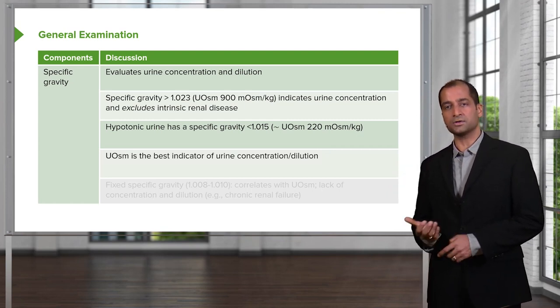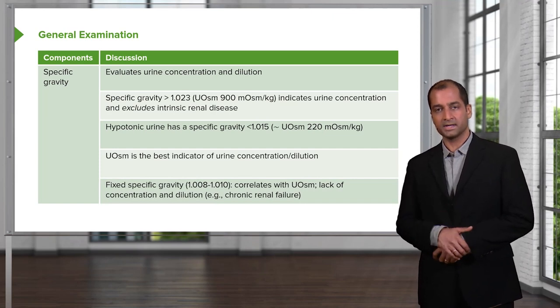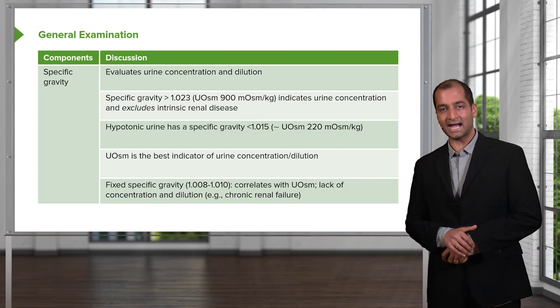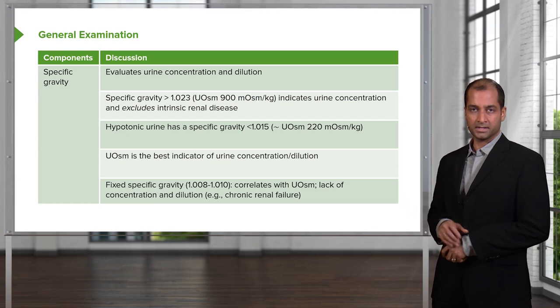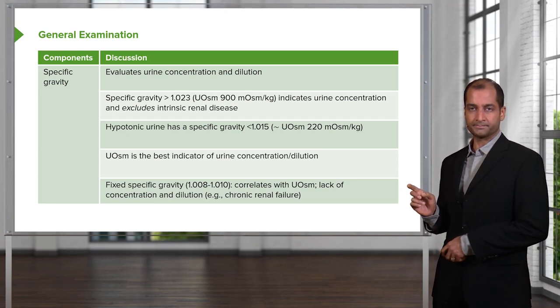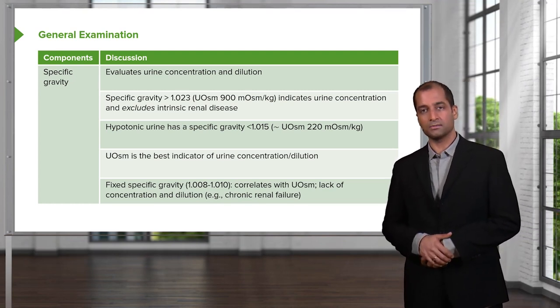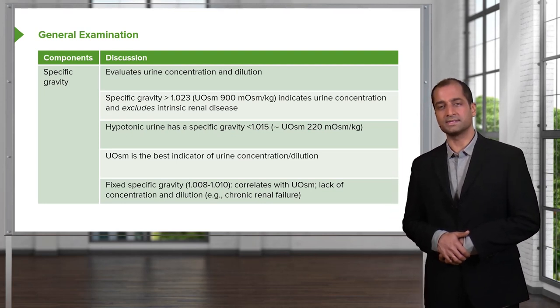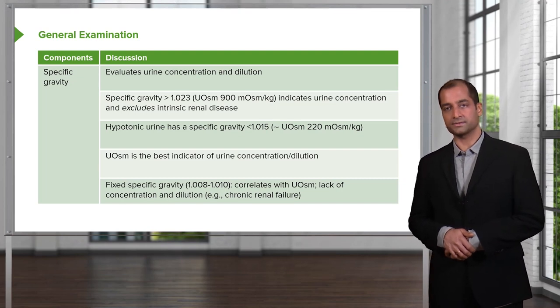Urine osmolarity is the best indicator of urine concentration or dilution. What if it was a fixed specific gravity? Let's say that it's fixed at approximately normal, we'll use 1010, 1.010. Correlation with urine osmolarity, lack of concentration and dilution. This indicates chronic renal failure. Take a look at the second row where we talked about specific gravity greater than 1.023. That is concentrated urine. That excludes intrinsic renal disease. But if your urine osmolarity is fixed throughout the nephron, nothing is changing. Why? Because the kidney is dying. Example, chronic renal failure. How often does this occur? You ever heard of diabetic nephropathy? Specific gravity, spend a little bit of time here, understand the concepts, and put in the values.